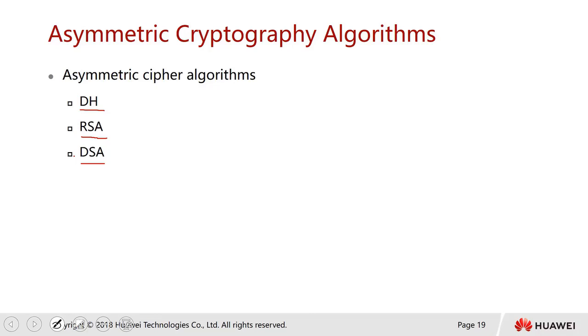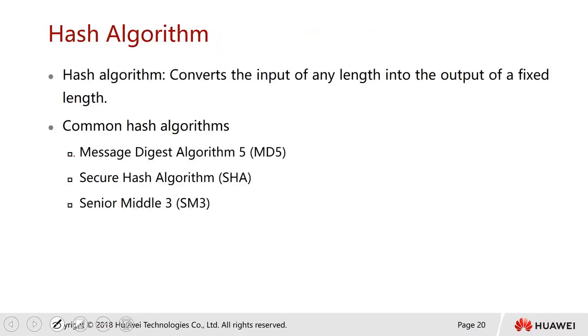DSA was developed by the United States government for digital signatures. It can be used for signing data but cannot be used for encryption. When DSA is used, creating a digital signature is faster than validating it. When RSA is used, validating the digital signature is faster than creating it.